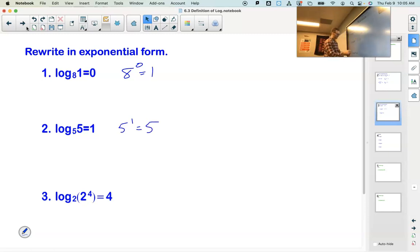Log base 2 of 2 to the 4 equals 4. This one's a little silly. Here's our base. Our base is 2. What's our exponent? Our exponent is over here. It's 4. 2 to the 4 equals what? Oh, 2 to the 4. Does that make sense? Yeah, it does. Good.